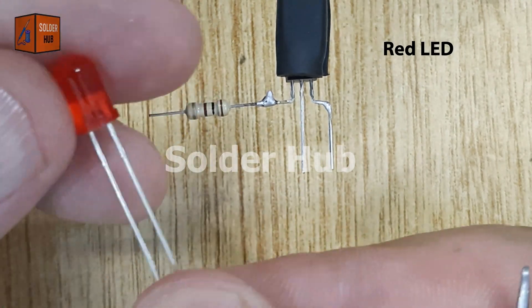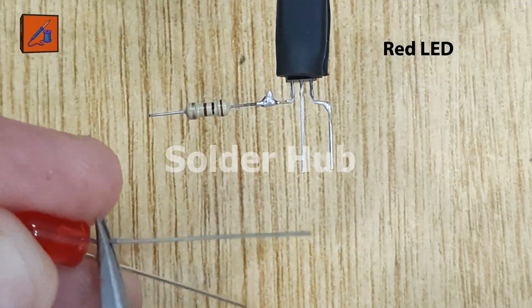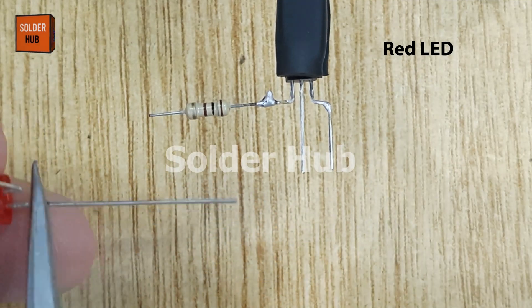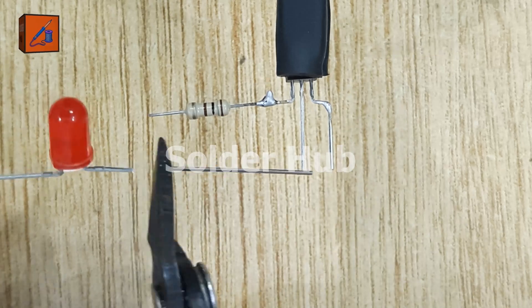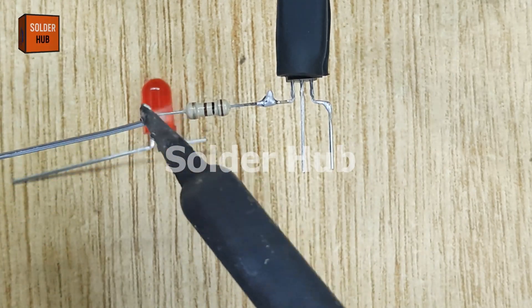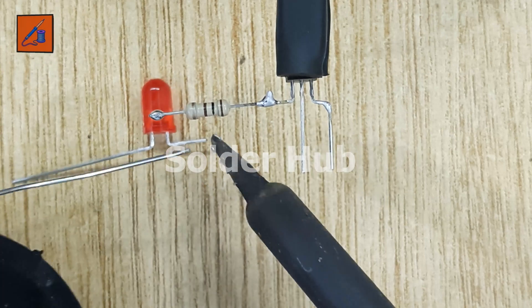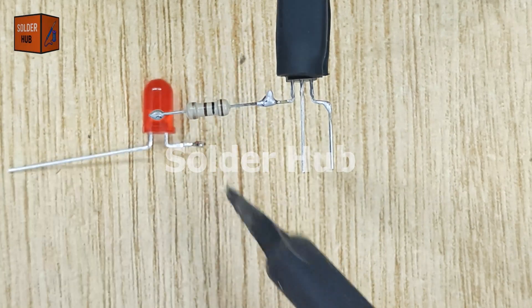Now, I take a red LED and bend both of its pins at a 90-degree angle to align with the resistor. I then trim the positive, longer pin of the LED slightly to keep the layout compact. Before soldering, I apply a bit of solder to the positive pin of the LED and to the free end of the resistor.